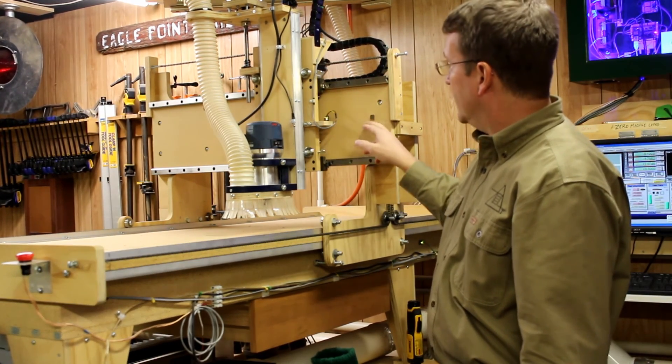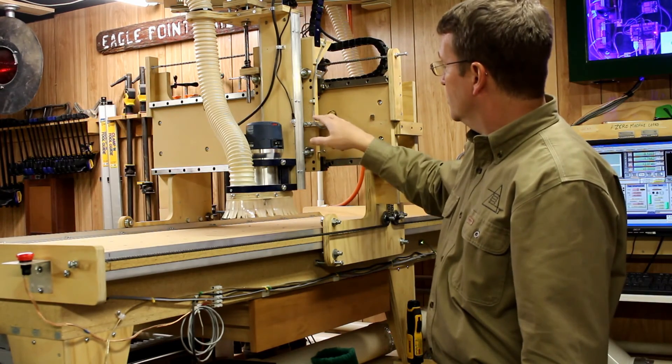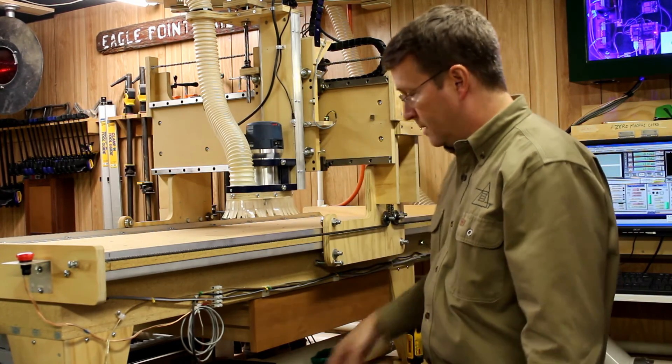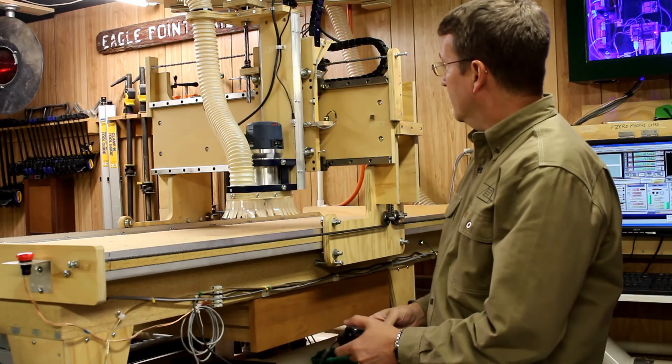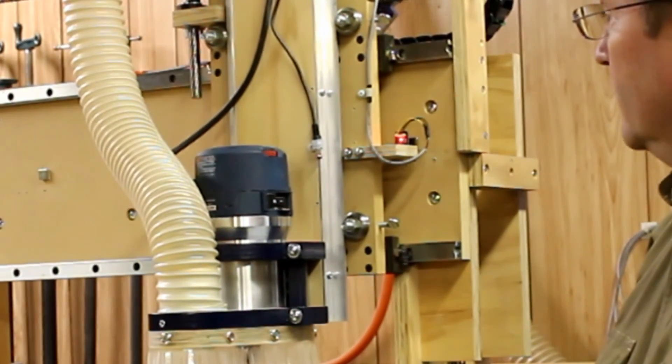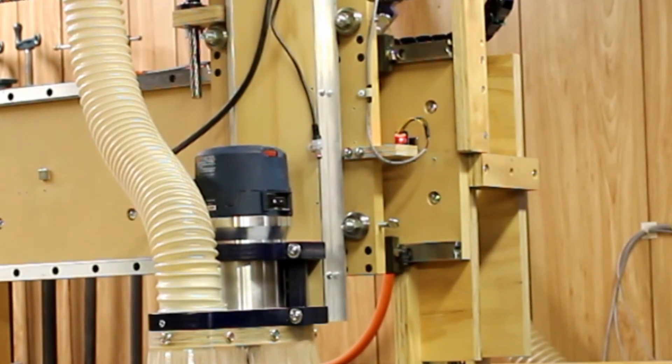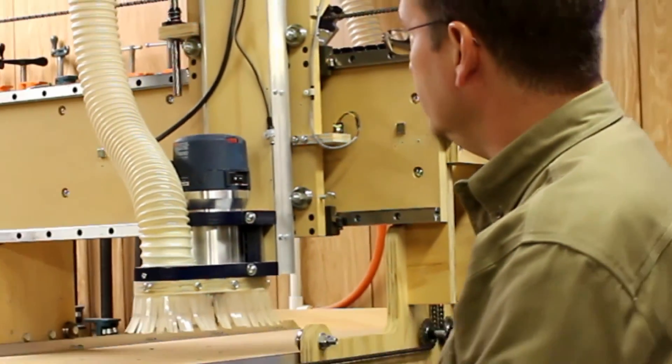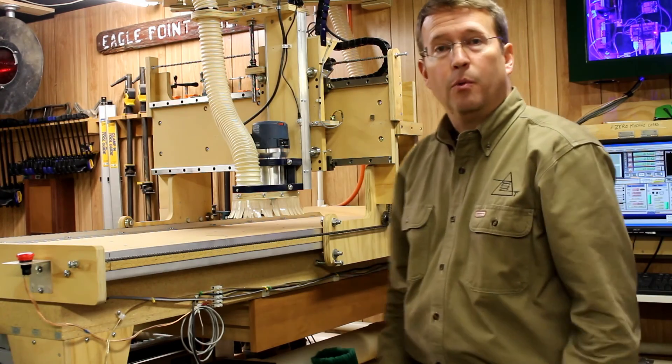And I've also put one here on the Y axis. In the Y axis, I chose to actually put this on the carriage and then put the magnets mount there. So now you can see, as I come by, how that works. And, of course, it works both ways.